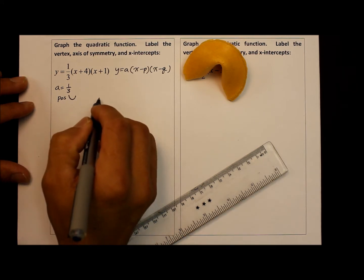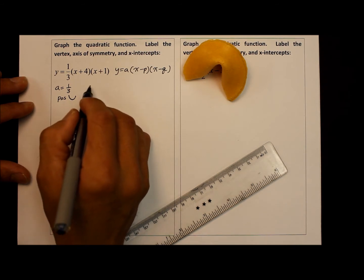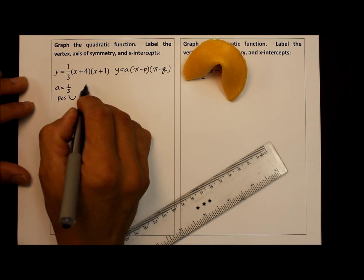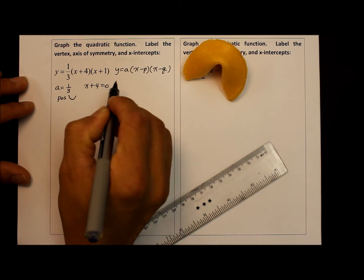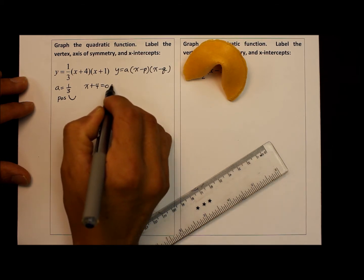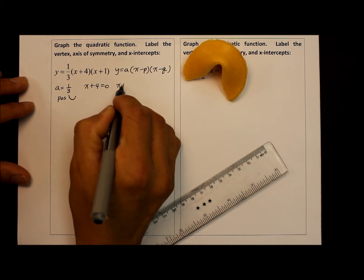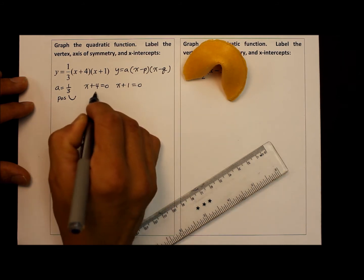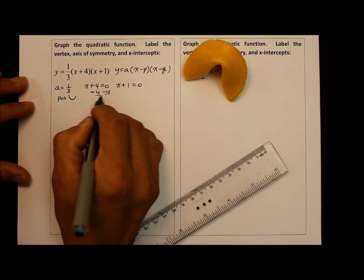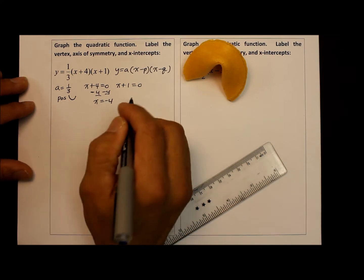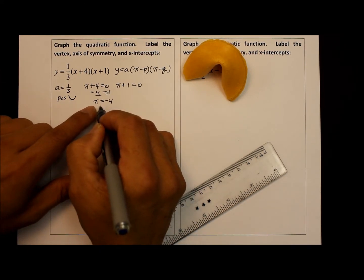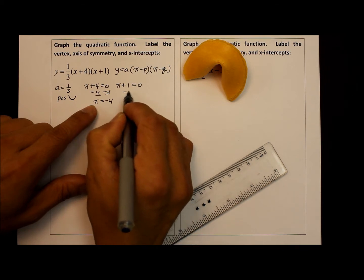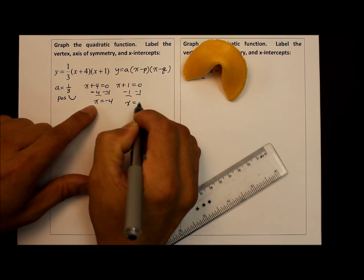Now we're going to use the algebra one scale to find the x-intercepts by using the zero product property. And how that works is we set each of the binomials, x plus four and x plus one, set each to zero. When you solve for x, what you in fact get is when the y is zero, the parabola will go through the x-intercepts at negative four and negative one.